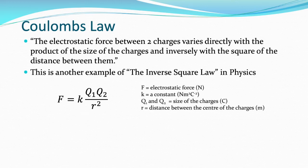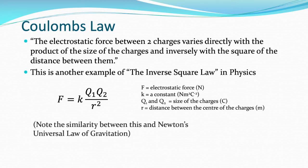F is the electrostatic force between two charges — it might be an attractive force or a repulsive force. Q1 and Q2 are the size of the charges in Coulombs, and R is the distance between the centre of the charges. K is the constant that allows us to get a force in Newtons when the charges are in Coulombs and the distance is in metres. Notice the similarity between this and Newton's universal law of gravitation — it's the same equation with charges instead of masses.